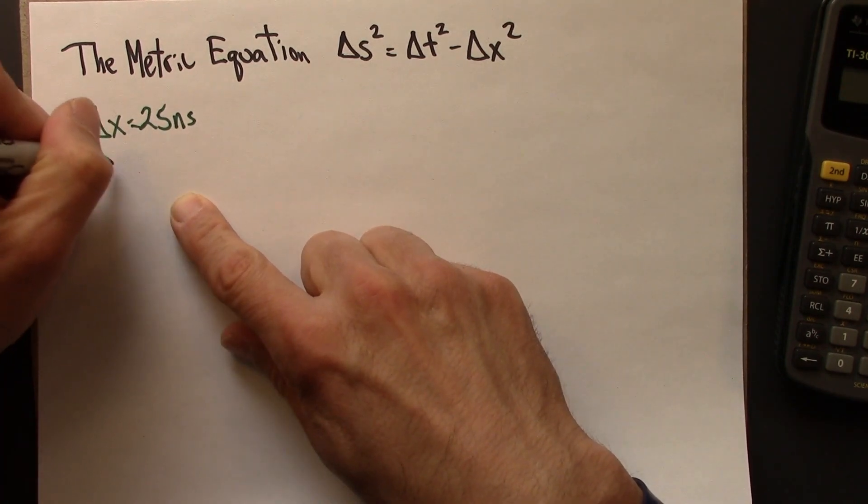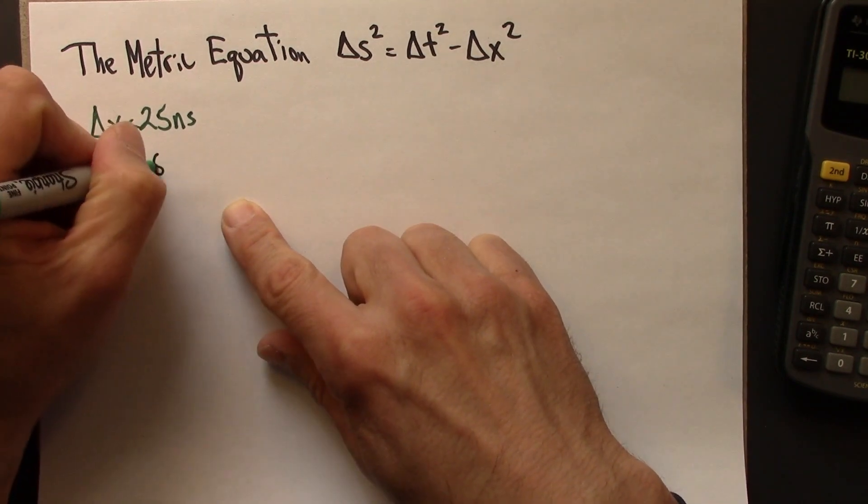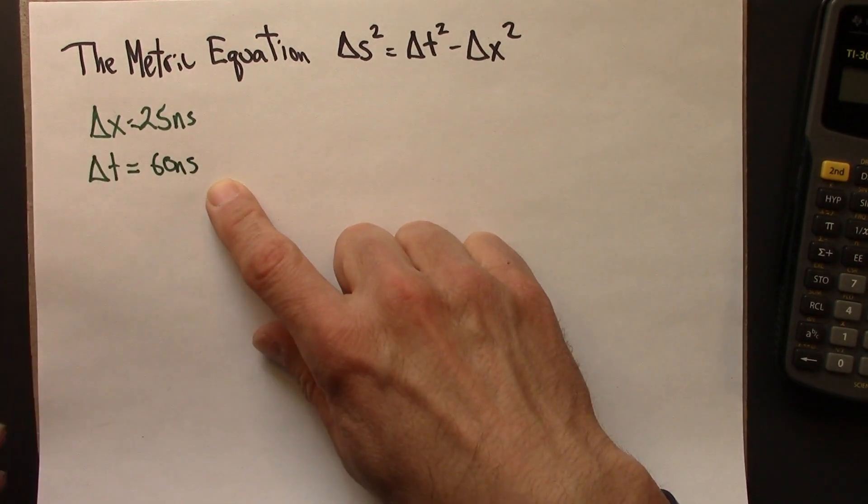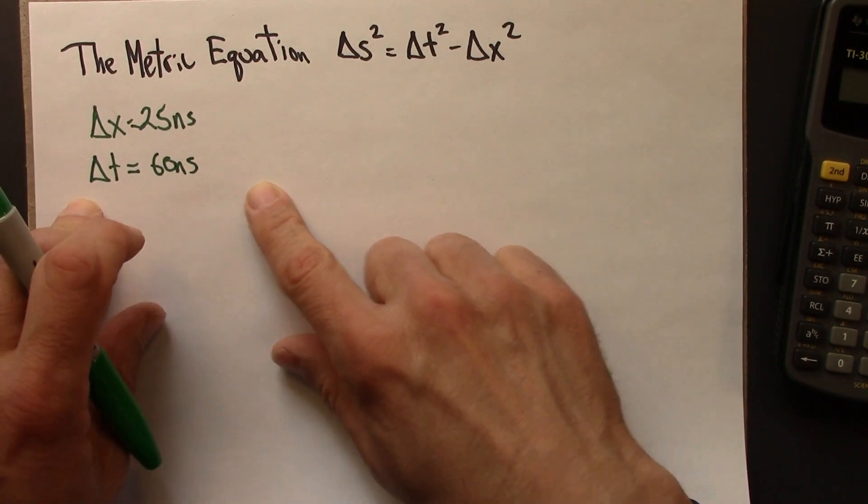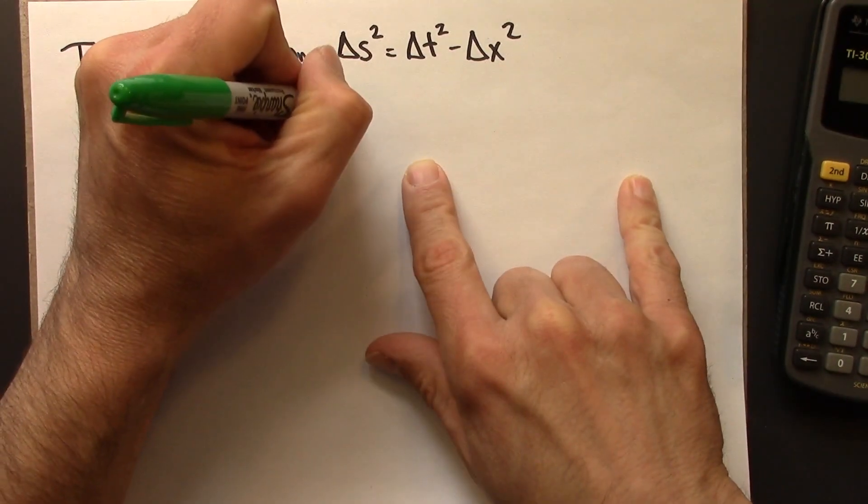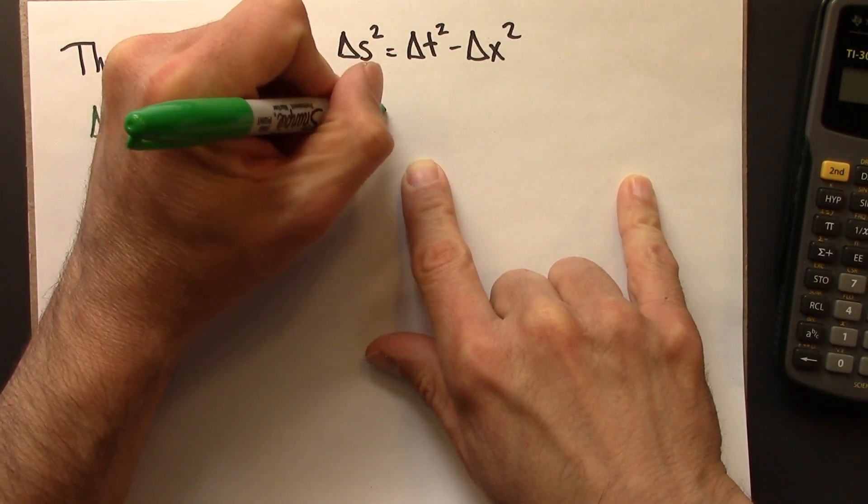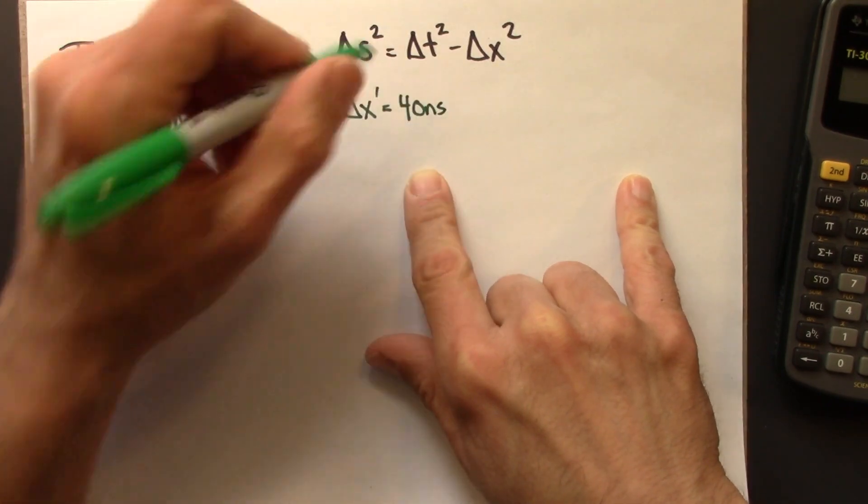And then a time interval, the time between those two events, is 60 nanoseconds. So that's what we see. In the other frame, in Anastasia's frame, she measures the two explosions to occur 40 nanoseconds apart.